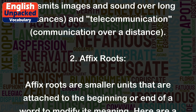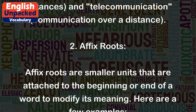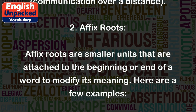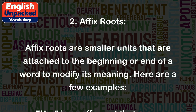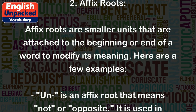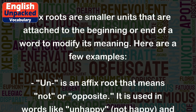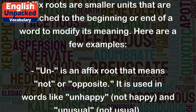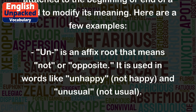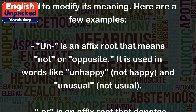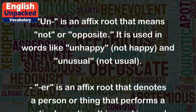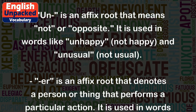Affix roots are smaller units that are attached to the beginning or end of a word to modify its meaning. 'Un' is an affix root that means 'not' or 'opposite.' It is used in words like 'unhappy,' meaning not happy, and 'unusual,' meaning not usual.